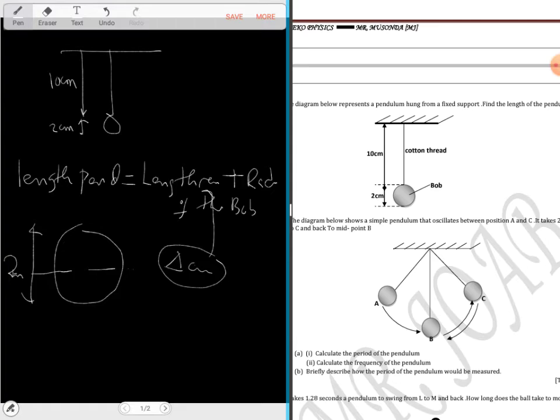The length is equal to 10 centimeters, the length of the thread, plus radius which is one centimeter. This will give you 11 centimeters as the length of the pendulum. You don't get the diameter, you want to get the radius of the bulb then you add it to the thread length.